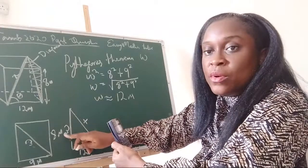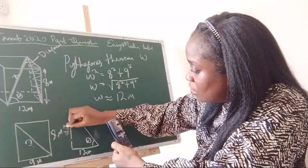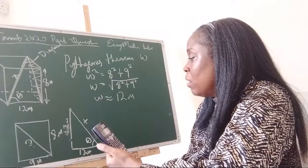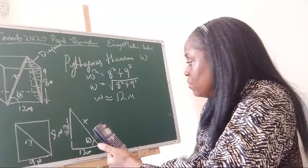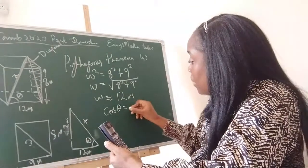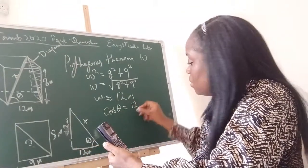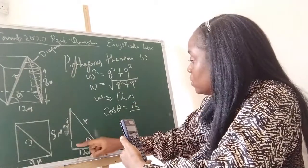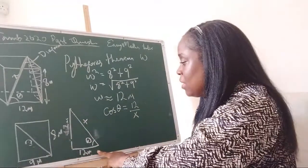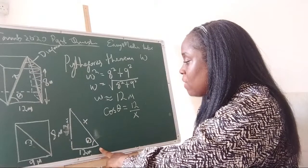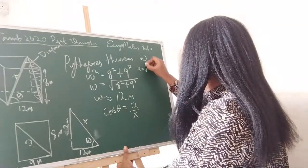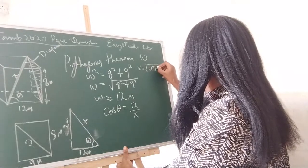Now that we have w as 12 meters, what is x? They're looking for the cosine of this angle. Cosine equals adjacent over hypotenuse. 12 is adjacent to this angle, and x is the hypotenuse. So x = √(12² + 12²). Using Pythagoras' theorem again with a calculator, I get approximately 17 meters for x.